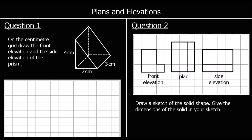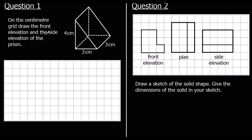Two questions to finish up. Question 1: drawing the front elevation and the side elevation. Looking at it from the front, you will see a triangle with a base of 2 and a height of 4. So 2 along, 4 up — that's our front elevation.